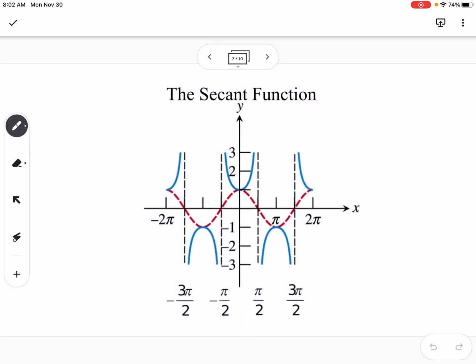So secant, we know secant is the reciprocal of cosine, so we know that secant is 1 over cosine, so that's why the cosine graph is graphed there in red. We know that the asymptotes are going to be where is cosine equal to 0.